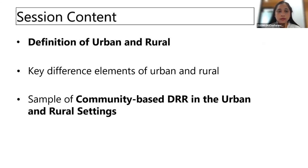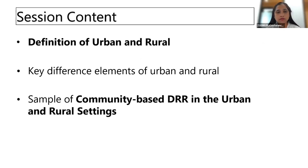This session contains three contents. First, I will describe the definition of urban and rural — how they differ, what key elements to consider, and which community is urban or rural. Second, we'll discuss the key differentiating elements of urban and rural. Lastly, I'll show some samples of community-based disaster reduction in urban and rural settings, giving you an idea of what it looks like and the participatory process to consider.